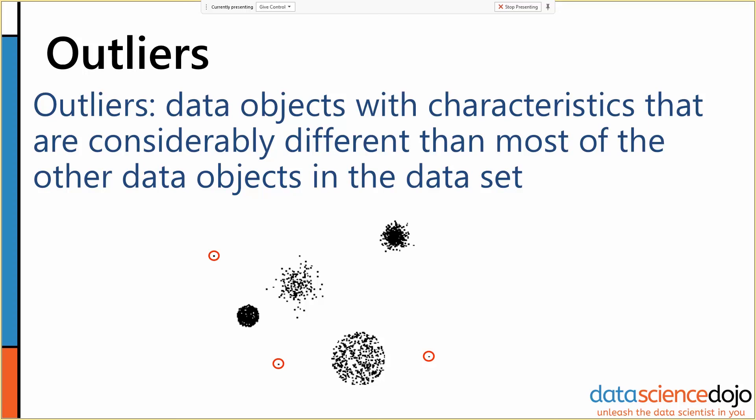All right, so that's outliers and noise, those are sort of the first category of data quality problems that get encountered a lot.